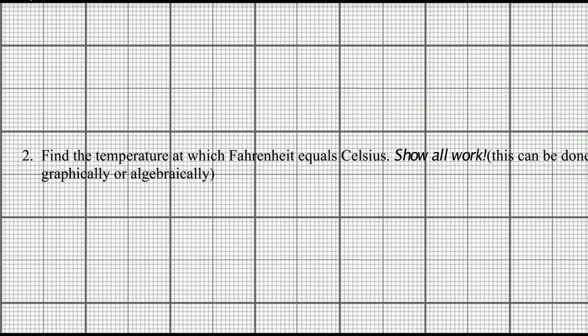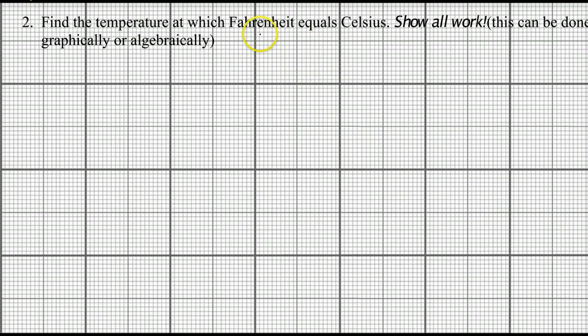Now, number two, find the temperature which Fahrenheit equals Celsius. You can do this a couple of different ways. You can use it graphically or algebraically. Now, graphically speaking, as I just erased my graph, we had a graph that looks something like this. Where I had my line looked like something like that. And this was my c equals the slope times the f minus whatever my y-intercept was, whatever that formula was. That's not really that secret anymore.